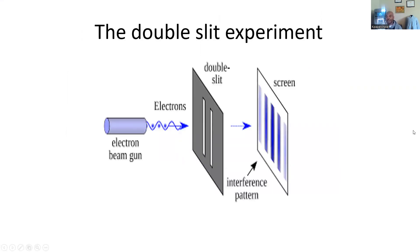In the double slit experiment, they fired electrons at a piece of cardboard with two slits. Instead of making two bands, it made many — the electrons were everywhere at once. But once an observation was made, they committed. The interference pattern still shows that they were everywhere at once before the observation was made.